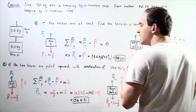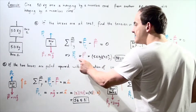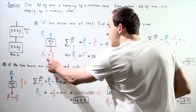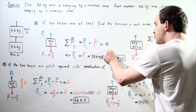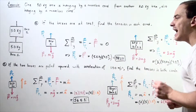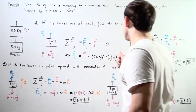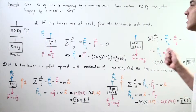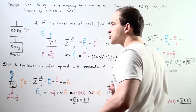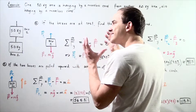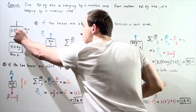Rearranging, we find that the tension in rope one equals mass times g. So 5.0 kilograms times 9.8 meters per second squared gives us 49 newtons. The tension in rope number one is 49 newtons. Now for rope number two — if we look at only rope two, we can treat everything below it as one system, one object.